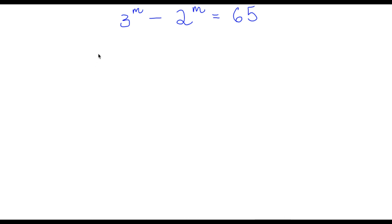Hey guys, welcome back to Clicker Academics. In today's video, I'm going to be teaching you guys how to solve this exponential equation. We have 3 to the power of m minus 2 to the power of m is equal to 65.